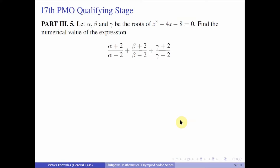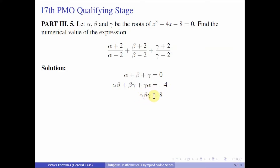Now let us proceed to the 17th PMO qualifying stage, Part 3, number 5. Let alpha, beta, and gamma be the roots of x cubed minus 4x minus 8 equals 0. Find the numerical value of the expression: alpha plus 2 over alpha minus 2, plus beta plus 2 over beta minus 2, plus gamma plus 2 over gamma minus 2. From Vieta's formulas: alpha plus beta plus gamma equals 0; alpha beta plus beta gamma plus gamma alpha equals negative 4; and alpha times beta times gamma equals 8.